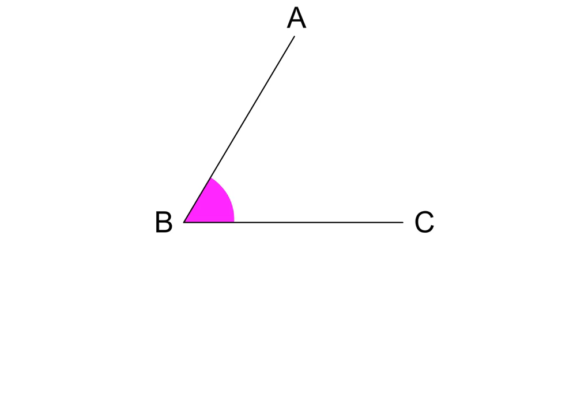Here we have an angle. What is the name of the angle? One way to name it is angle ABC. The letter B is in the middle of the name because the angle is at B.